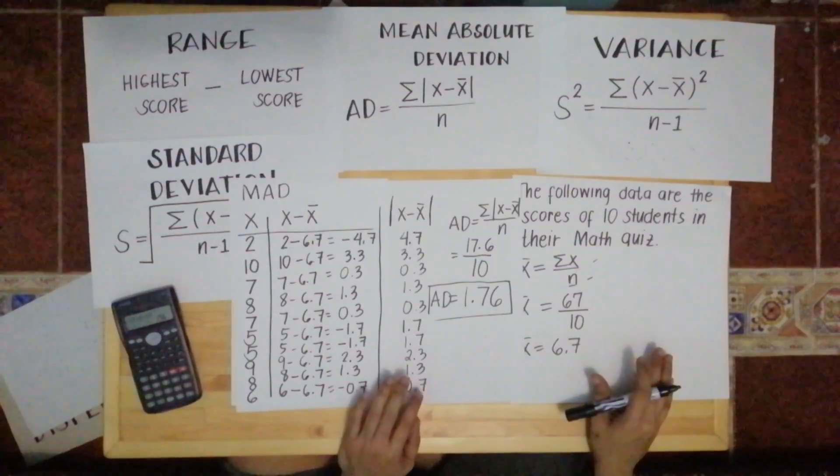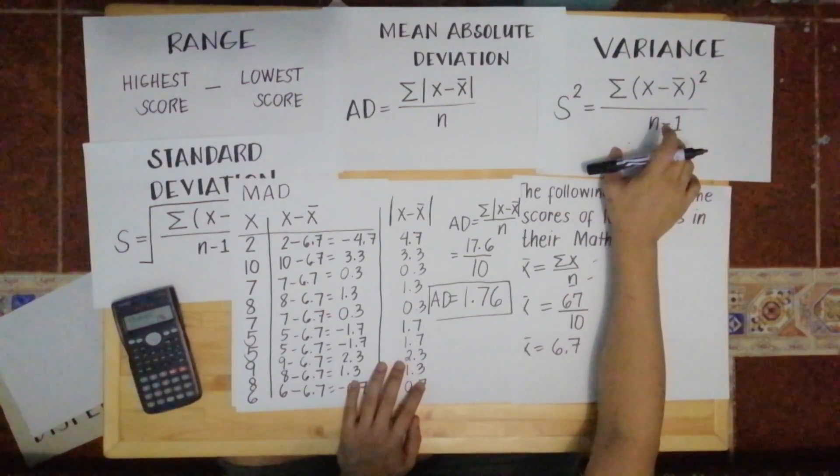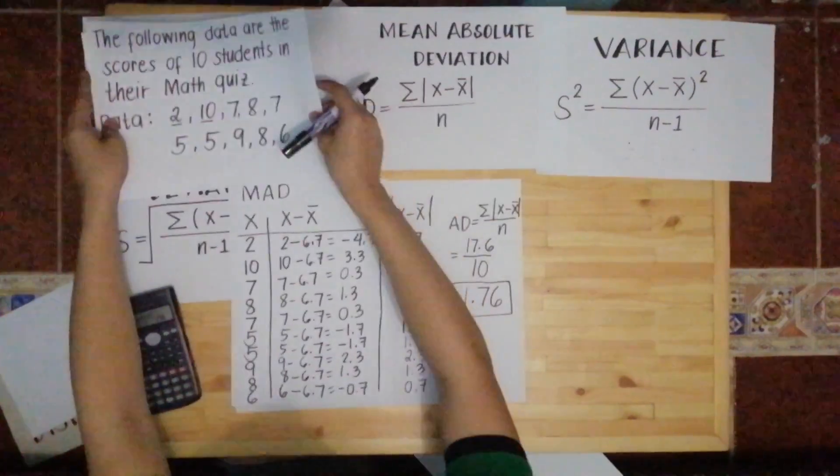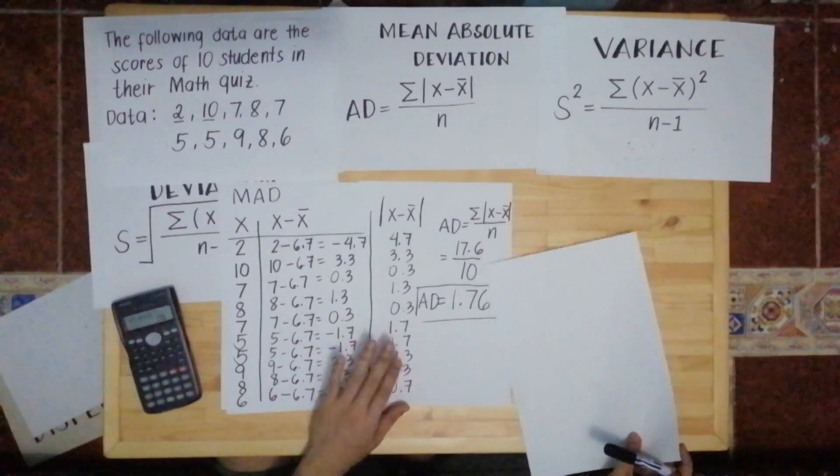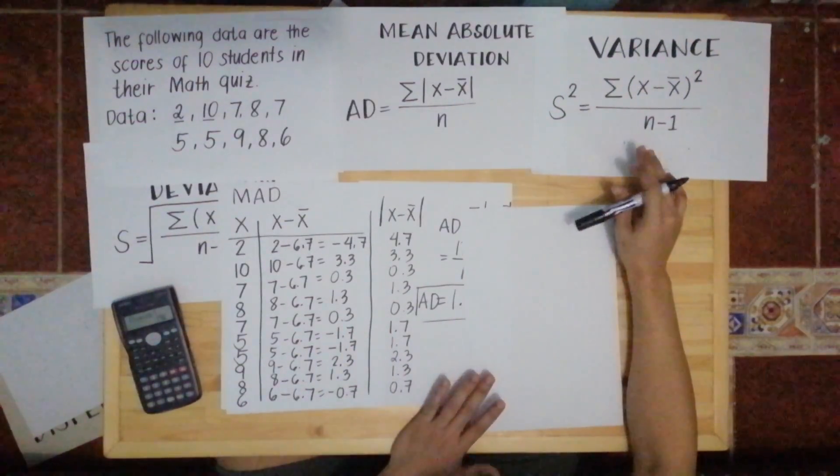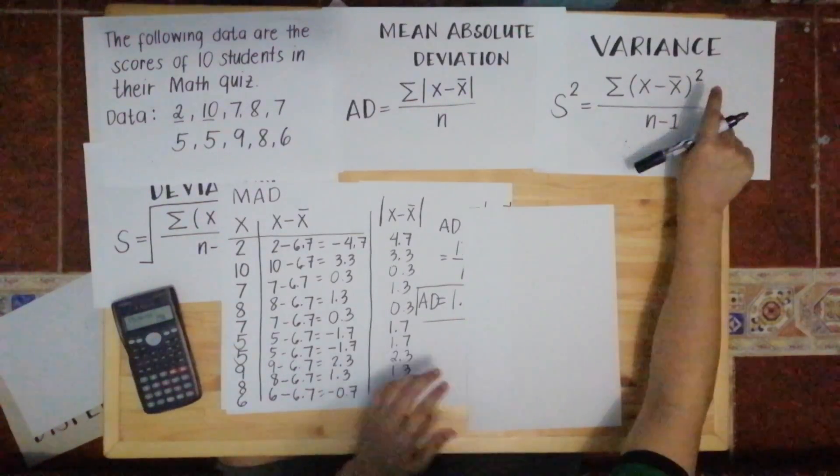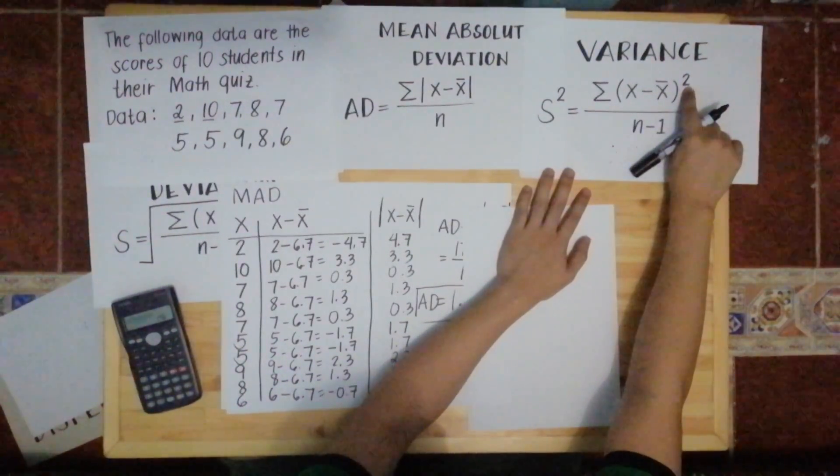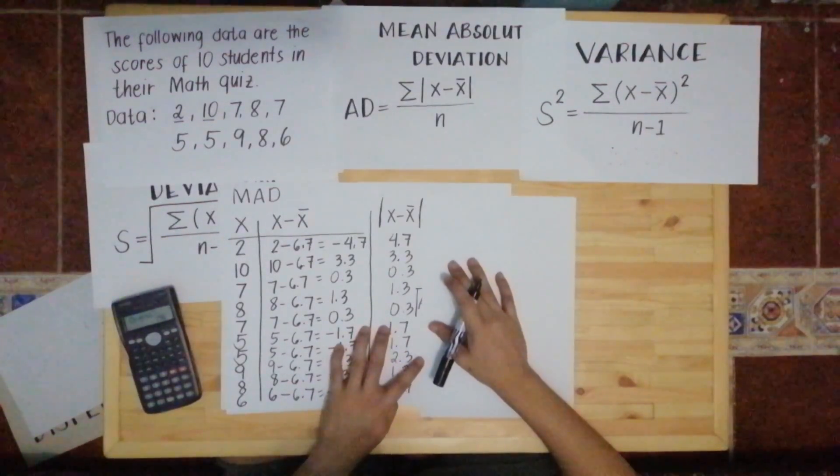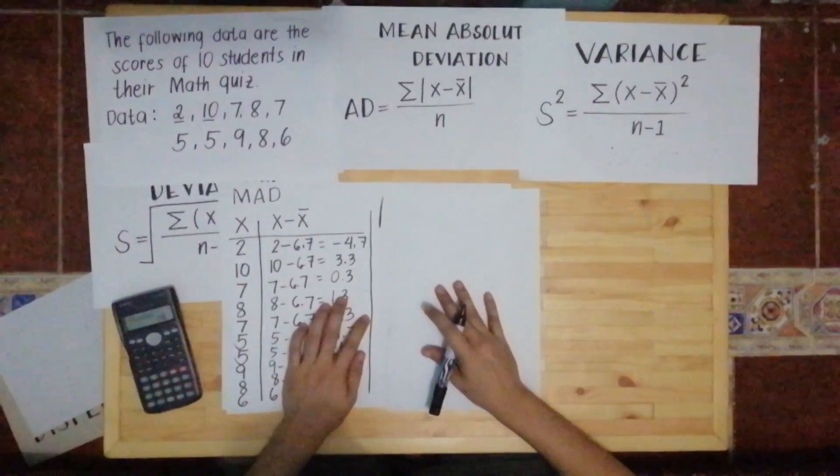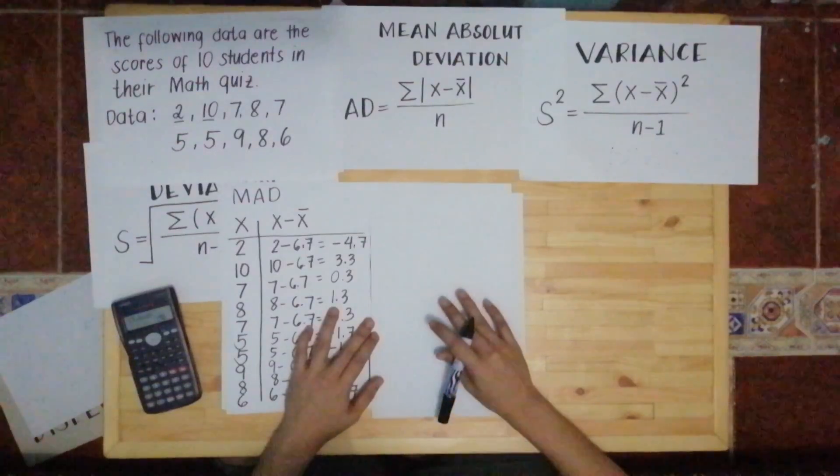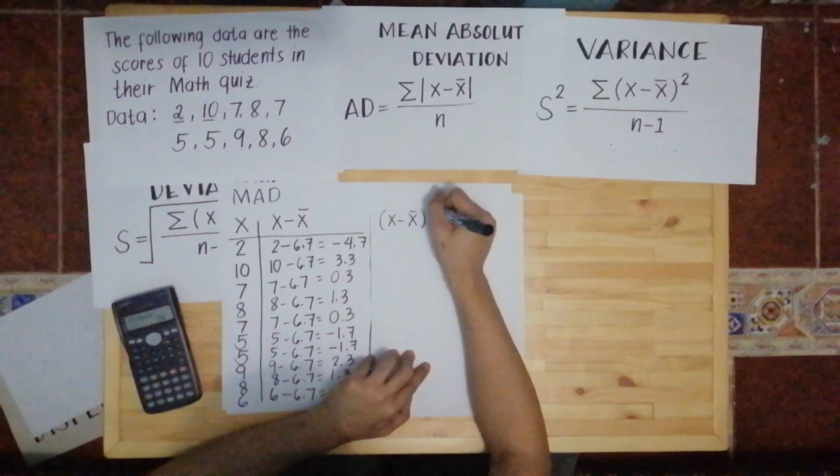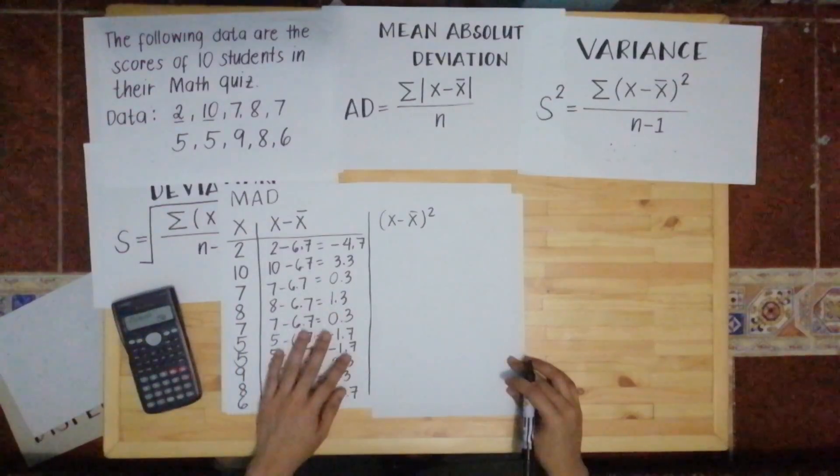So now we'll get the variance. To get the variance, we have the formula: summation of X minus mean squared. Earlier it was just X minus mean, but now there's no absolute value. It's in parentheses, then raised to 2. So we can continue this. We still need X minus mean, and we have X minus mean. Let's remove the absolute value. That's the X minus mean. Now we just need to add squared.